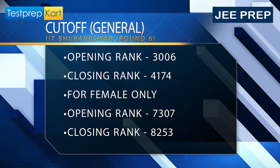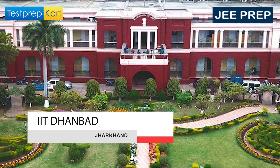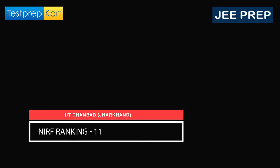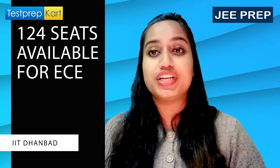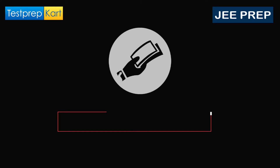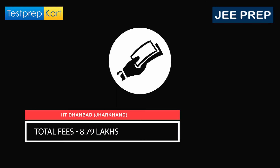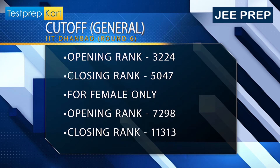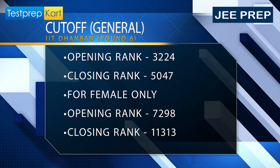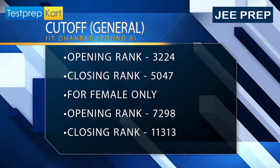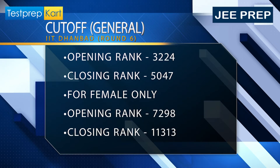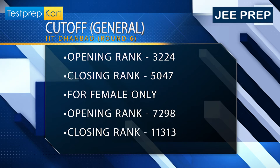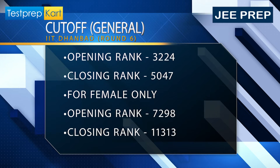The next IIT is IIT Dhanbad (ISM), which is in Jharkhand, with a NIRF ranking of 11. The seats available for the ECE branch are 124, and the fees for the whole course is around 8.79 lakhs. The 2021 Round 6 general category cutoff for gender-neutral was an opening rank of 3224 and a closing rank of 5047. For females, the opening rank was 7298 and the closing rank was 11313.